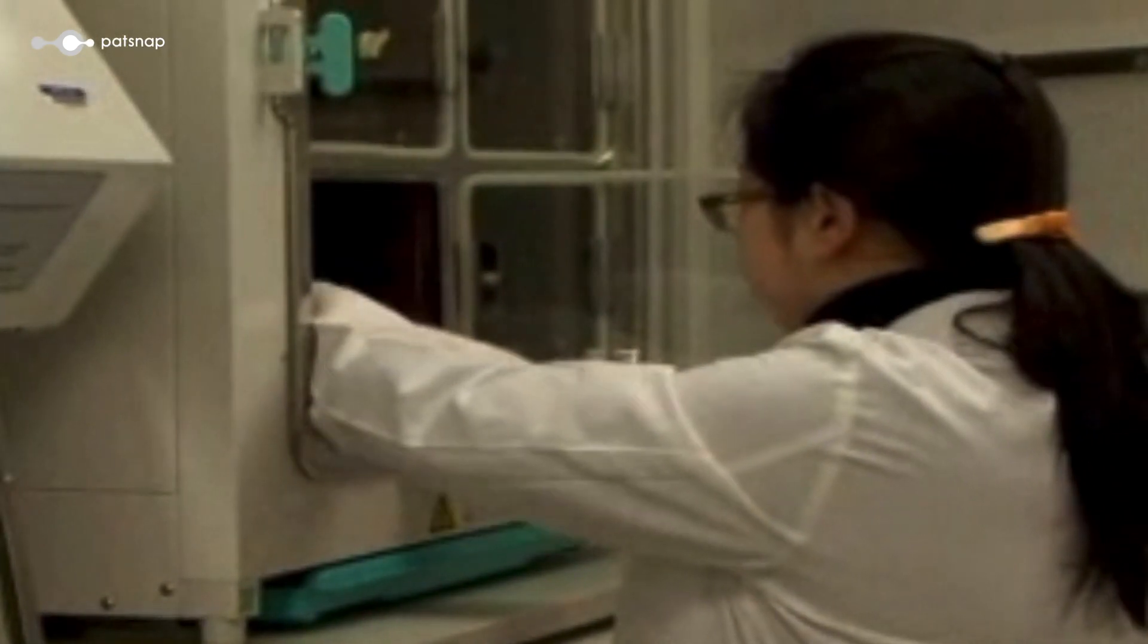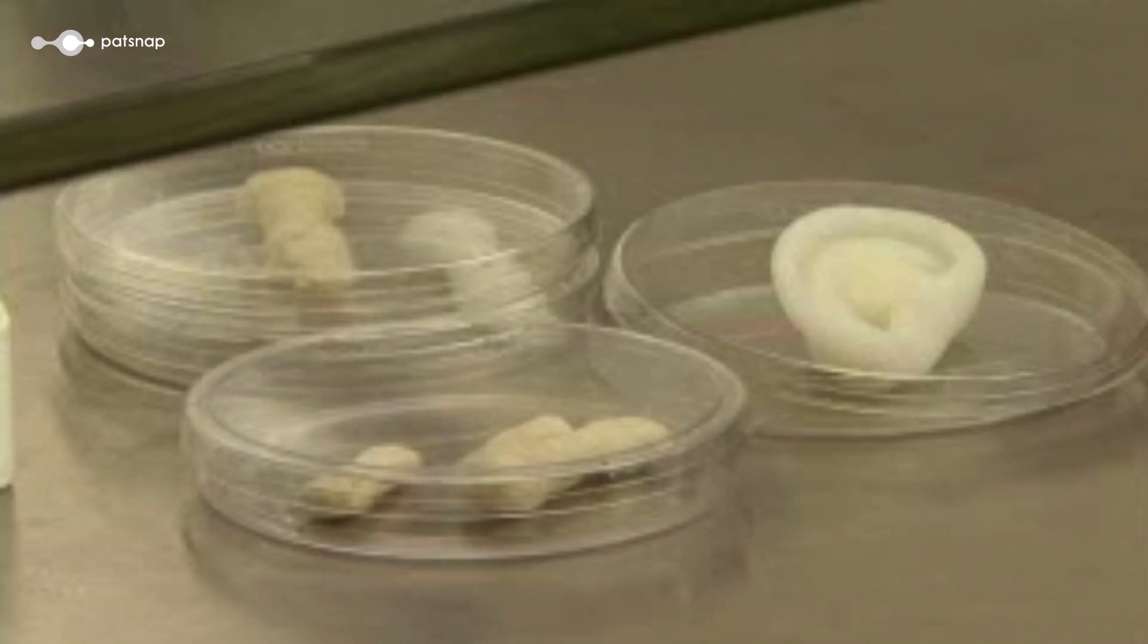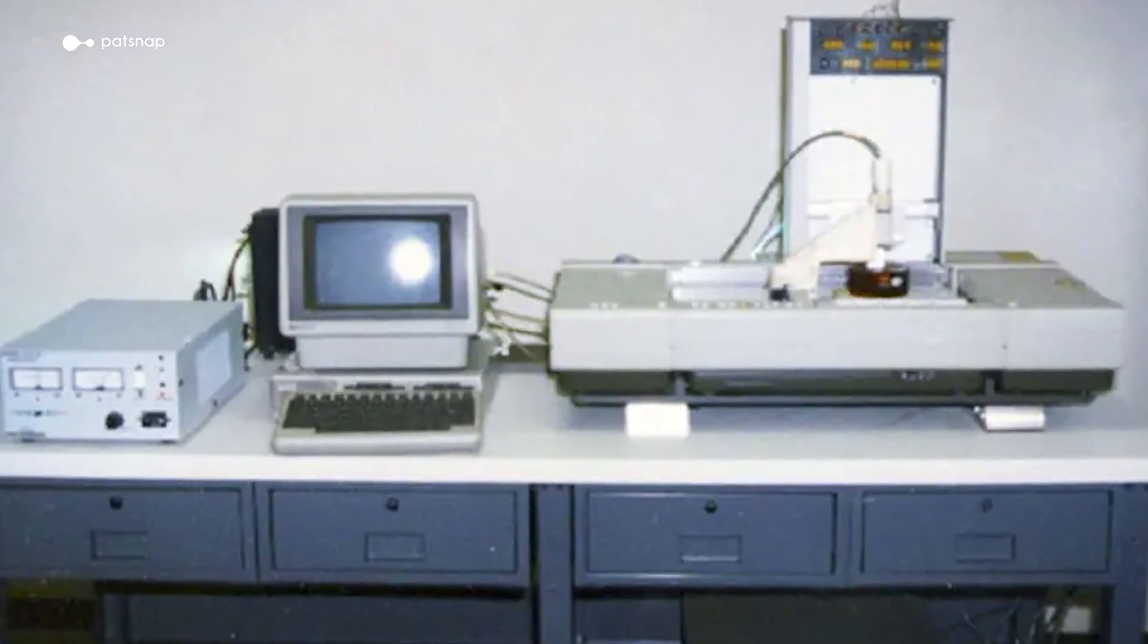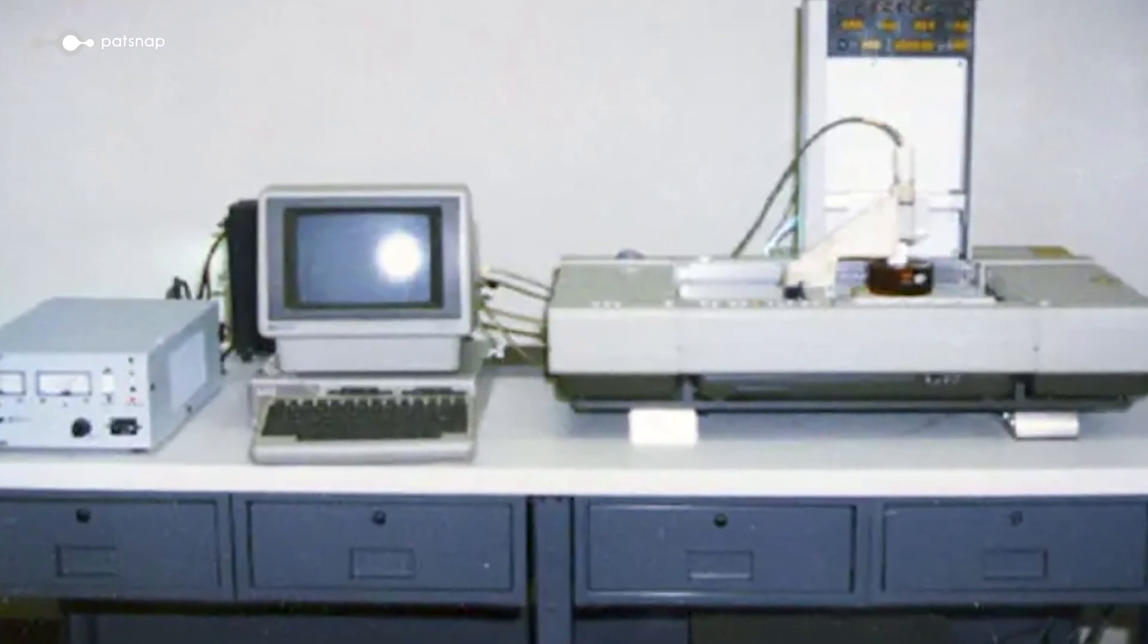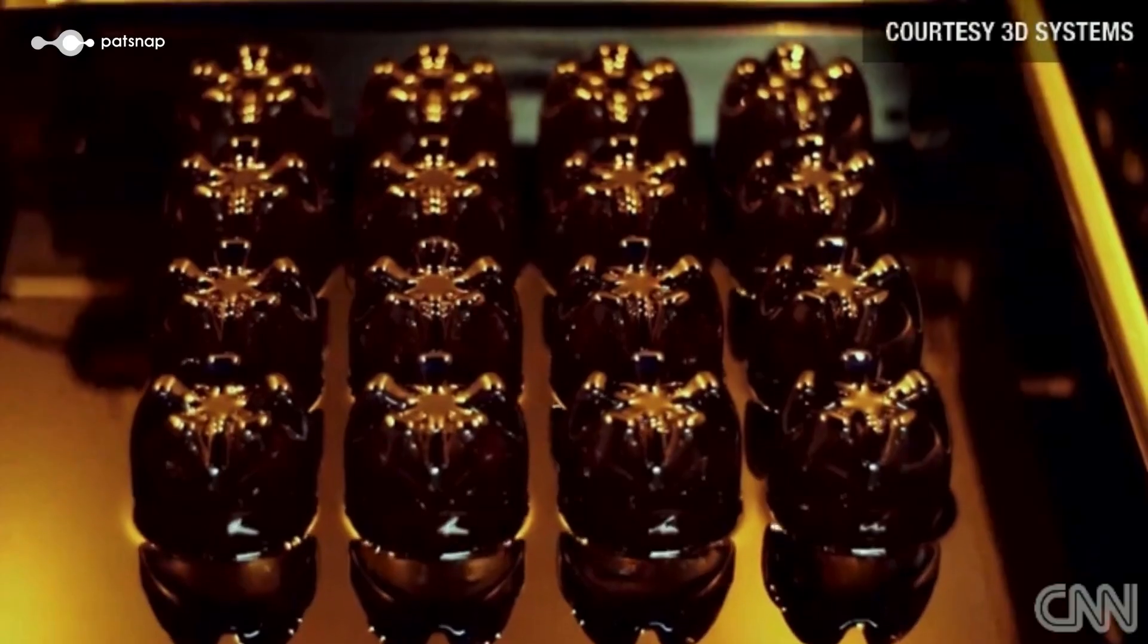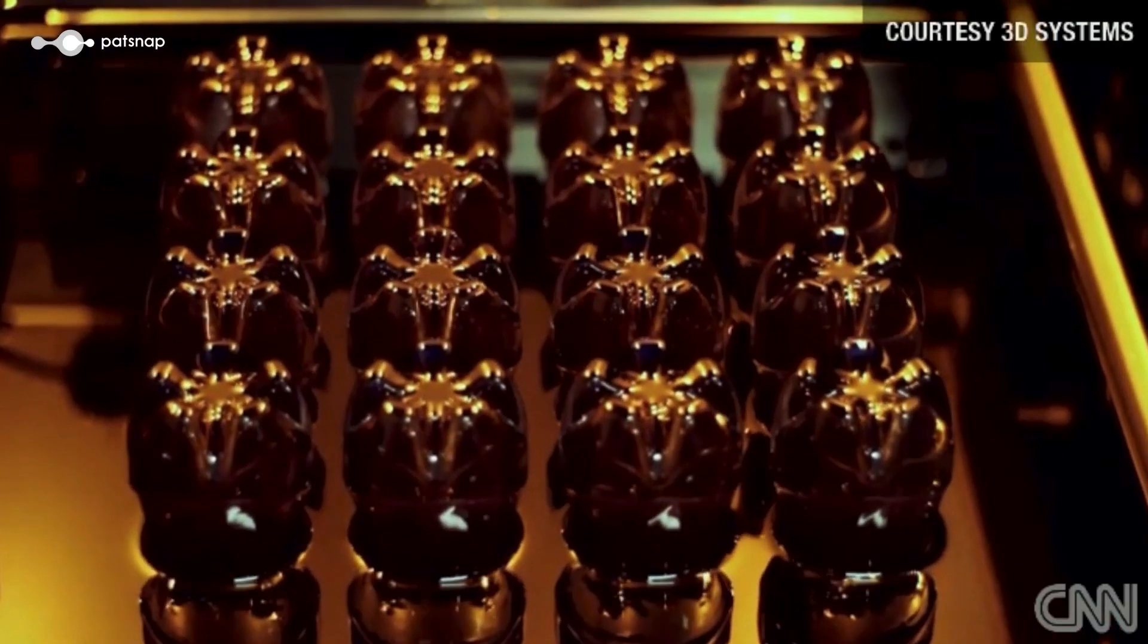The idea of creating living tissue using technology has been around for decades, but it's only recently that significant strides have been made to turn theory into reality. In 1983, Dr. Charles Hull invented stereolithography, a technique that laid the groundwork for modern 3D printing. Although originally intended for creating plastic prototypes, this innovation later paved the way for using similar principles to build biological structures.